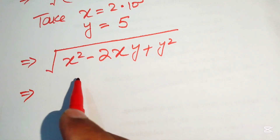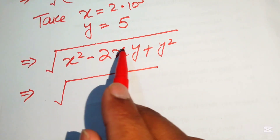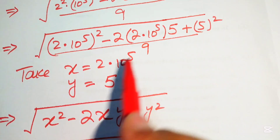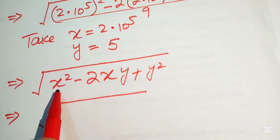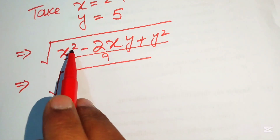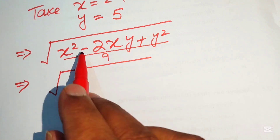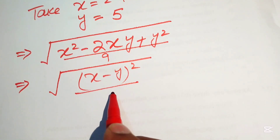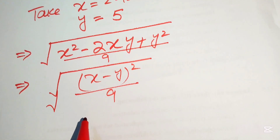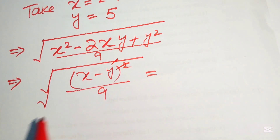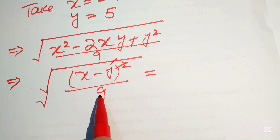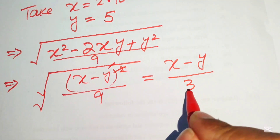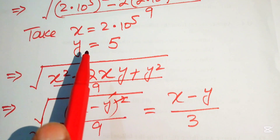The square and square root cancel, and the square root of 9 equals 3. So the expression simplifies to (x − y) / 3.